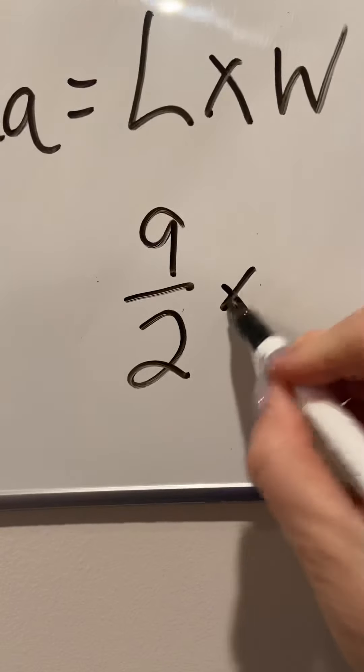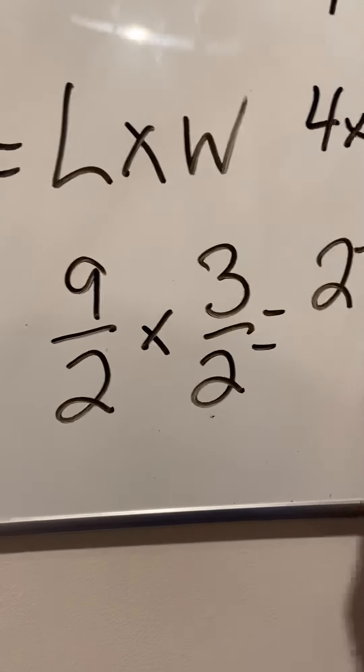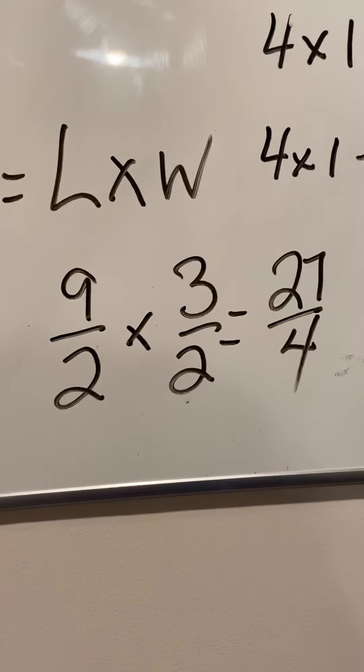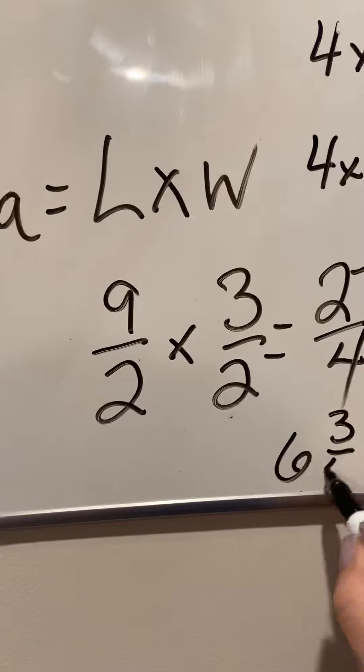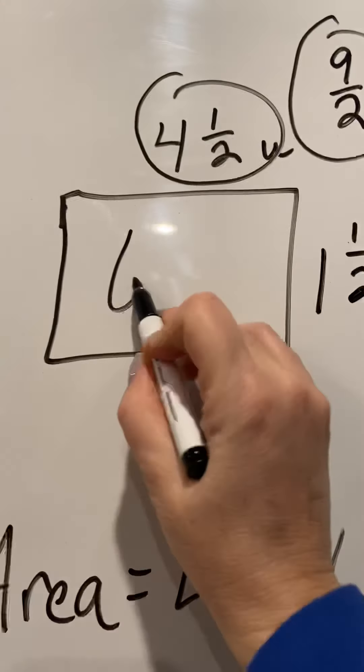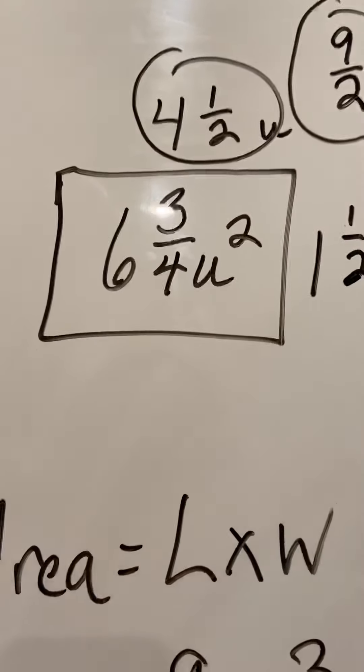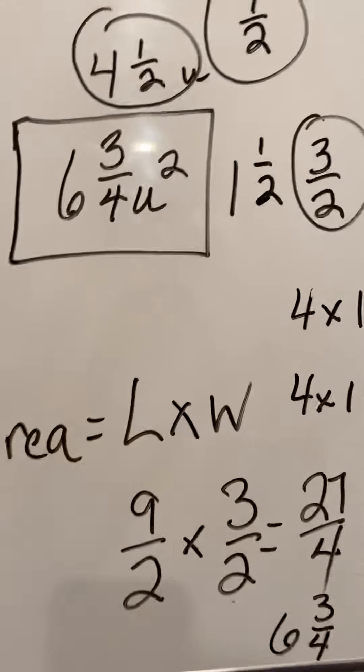So you're taking nine halves times three halves, which would equal 27 fourths. Do you see that? So then that would be six and three fourths. So if I go back up here, my units would be six and three fourths units squared. That's it.